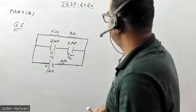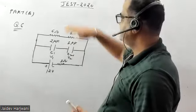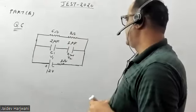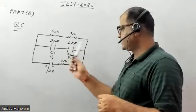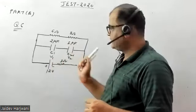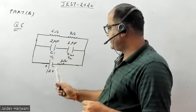Hello students, let us see this question from JEST 2020, question number 6 from part B. They have given a circuit where two capacitors are connected in series and it's based on a battery of 12 volts.